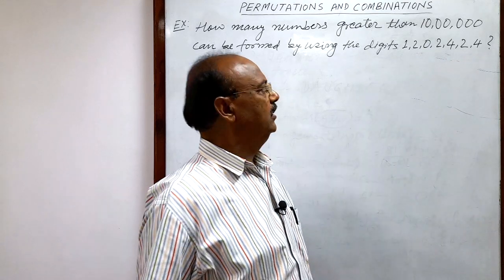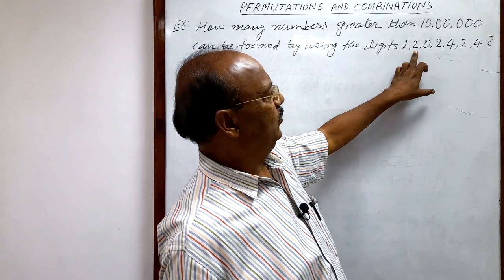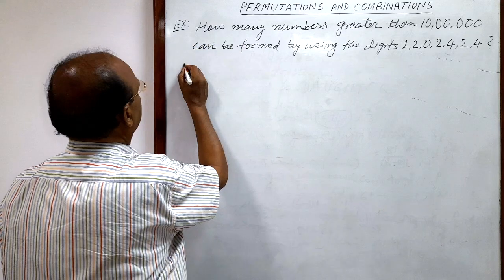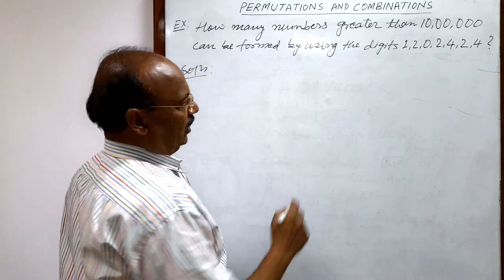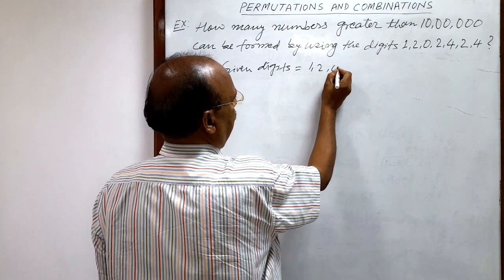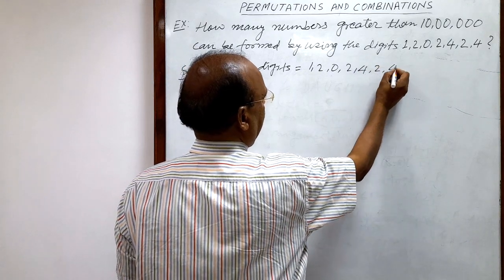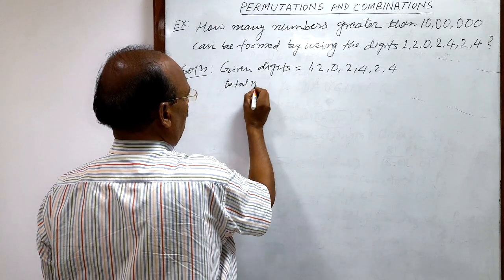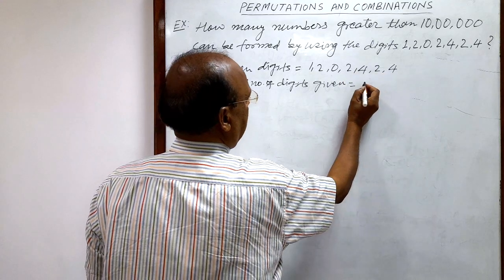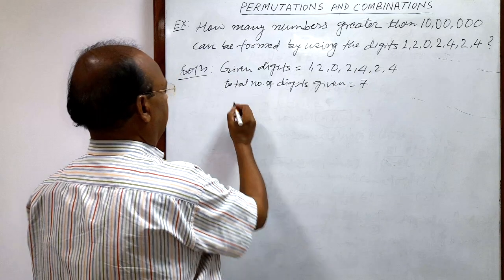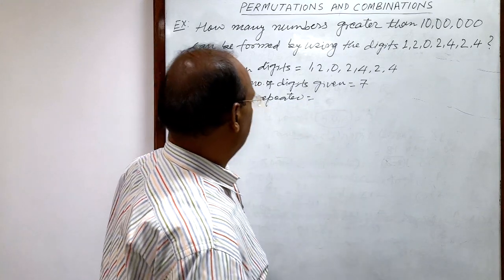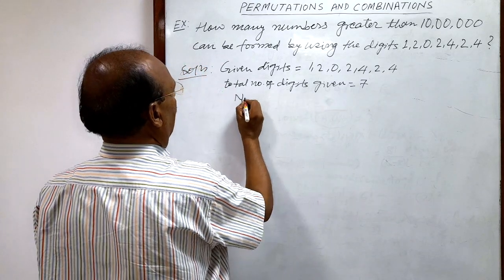You have to take care that some digits are repeated. For example, 2 is repeated three times and 4 is repeated twice. The given digits are 1, 2, 0, 2, 4, 2, 4. Total number of digits is seven, and the number of twos is three, the number of fours is two.